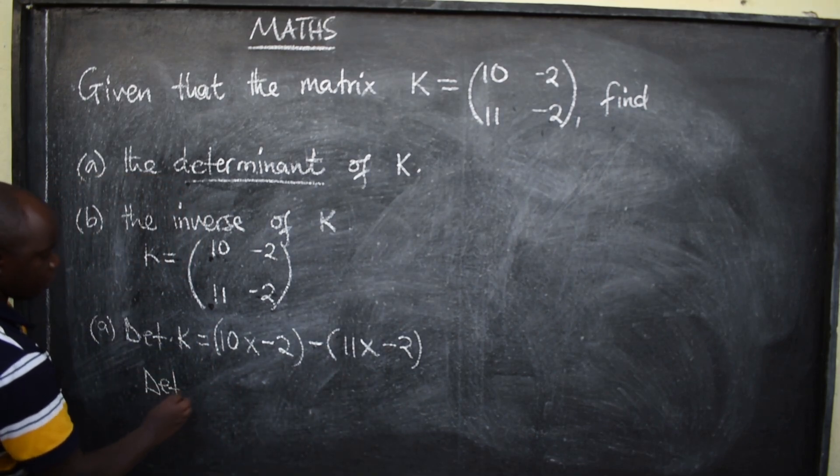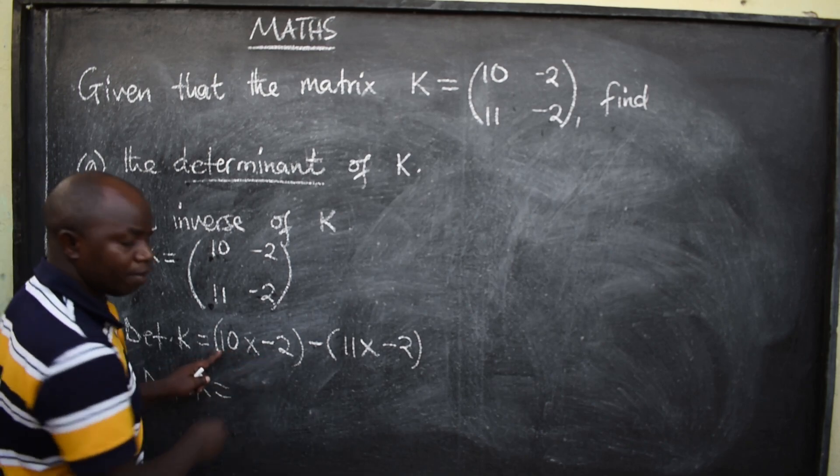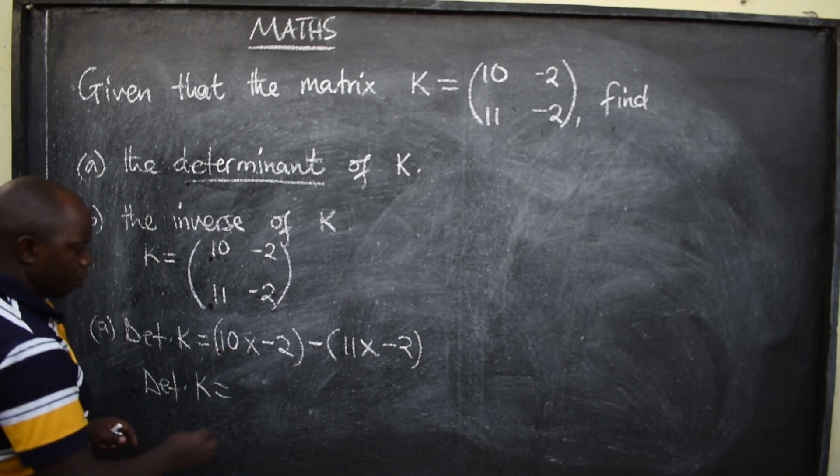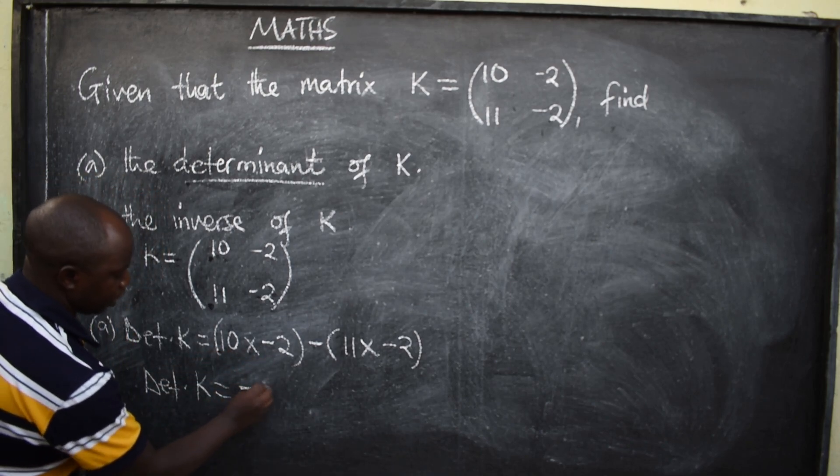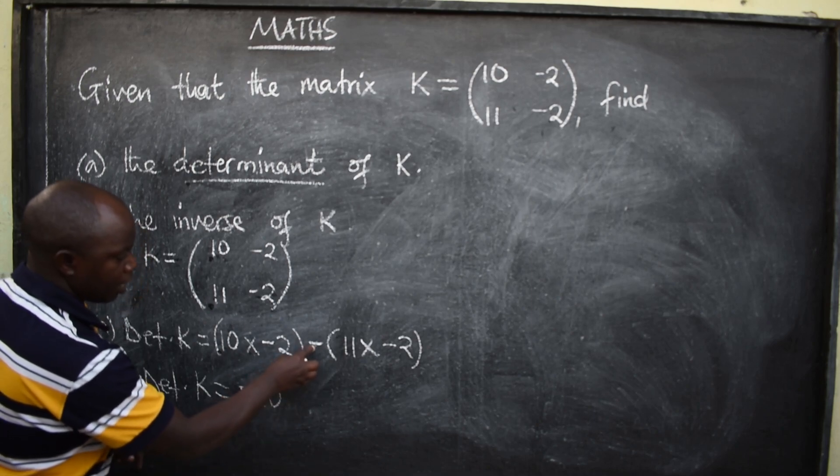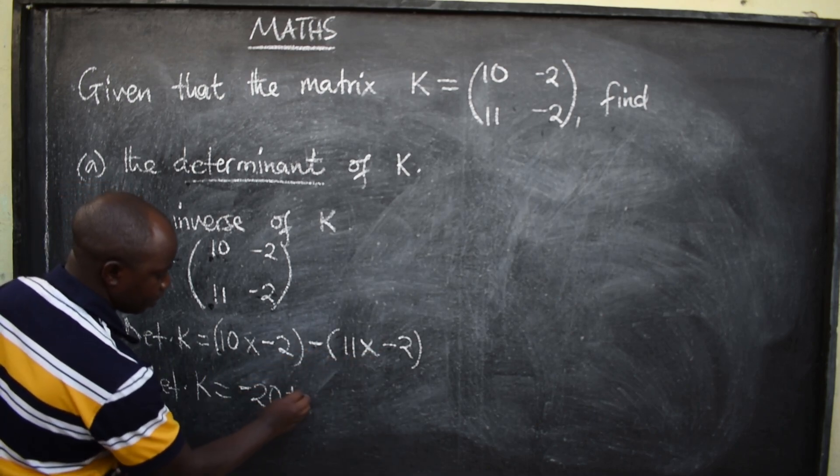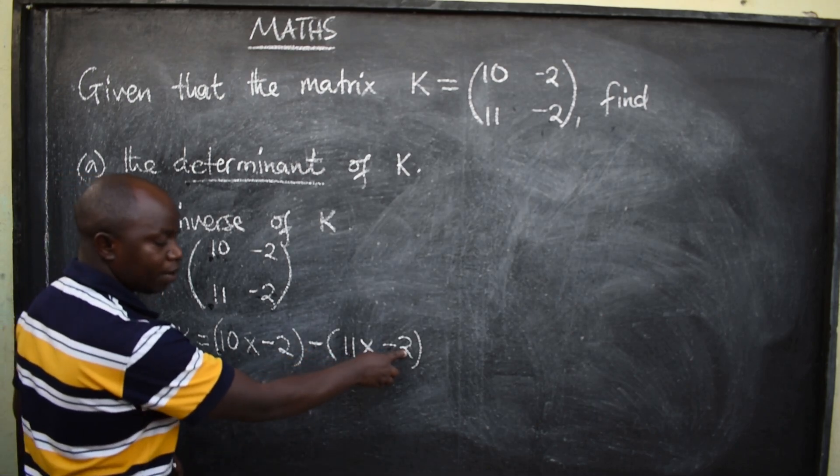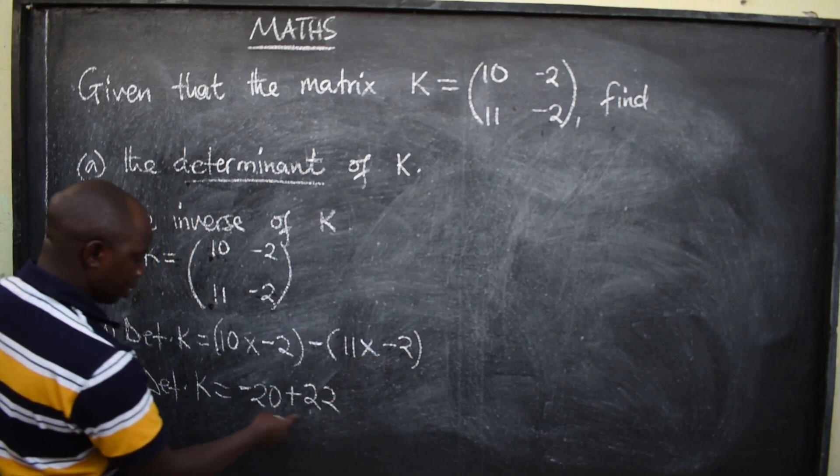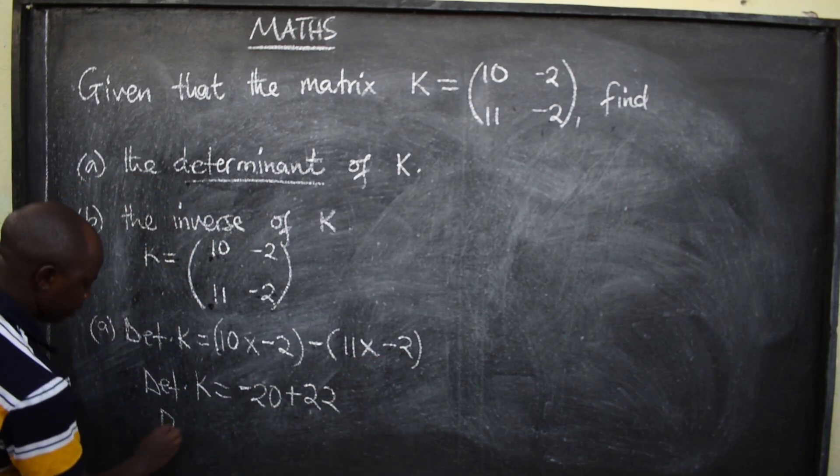Determinant of K will be equal to, 10 multiplied by negative 2 will give us negative 20, minus, minus will give us a positive, 11 multiplied by 2 will give us 22. Now, we can find the answer to this.